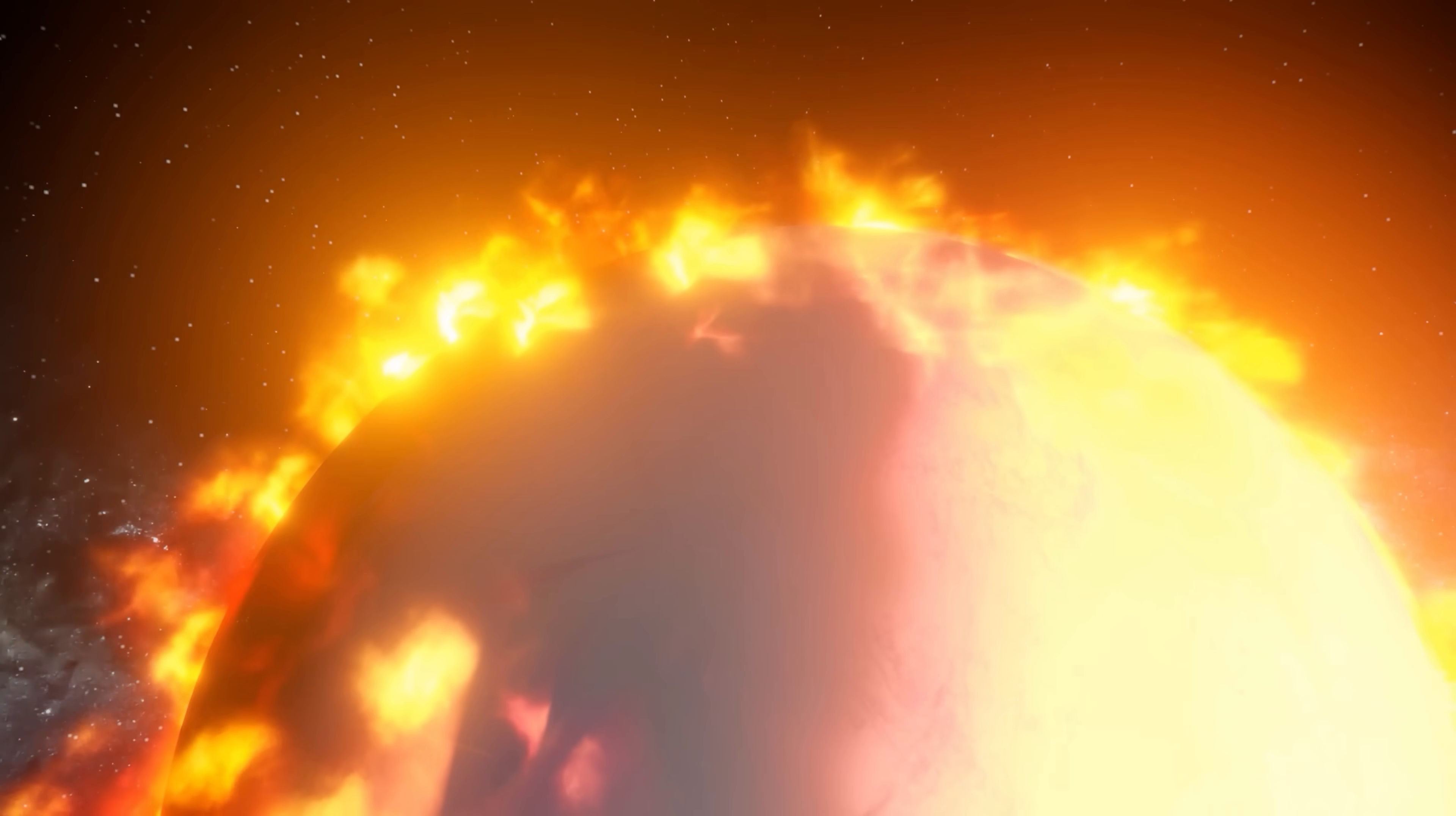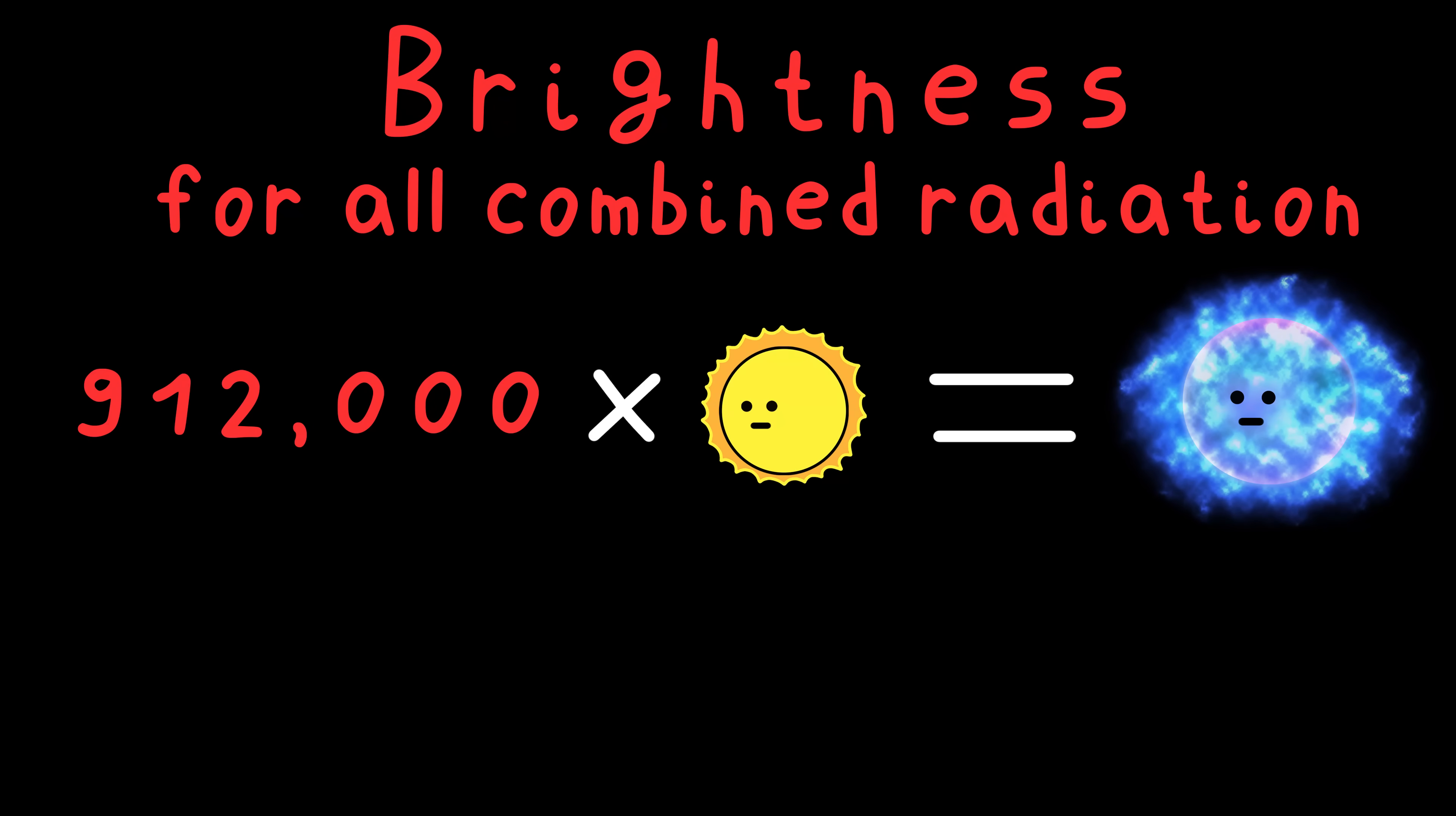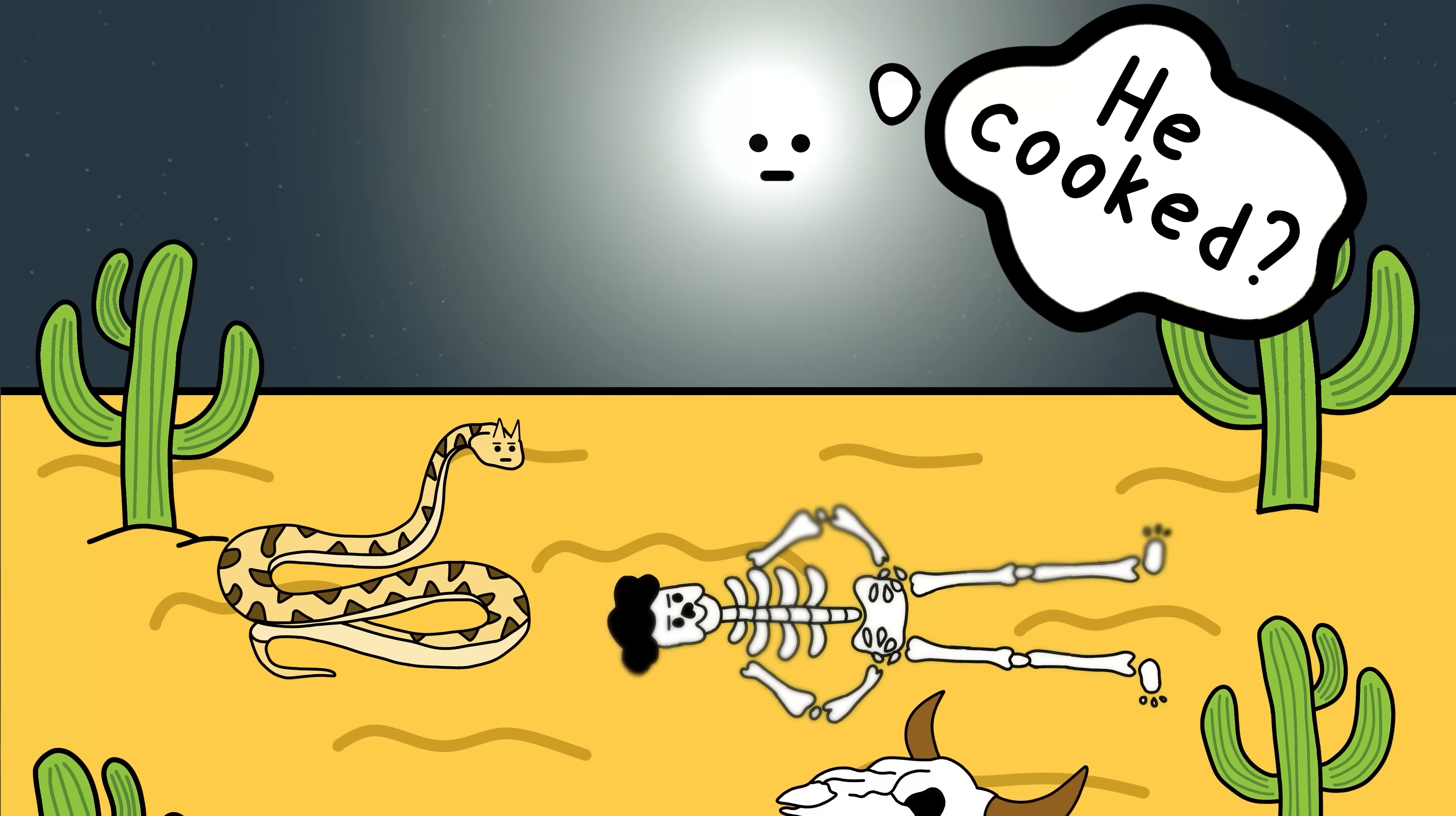And then the UV radiation from the Wolf-Rayet star would sterilize the entire planet before your neurons finish screaming. Of course, this would only happen if the 912,000 times brighter than the sun star, and yes that's how fucking bright it is, didn't immediately dehydrate the planet and turn it into a sand pit of your tan skeleton.